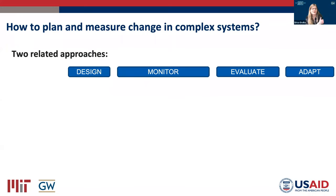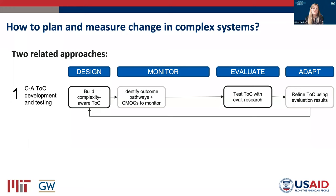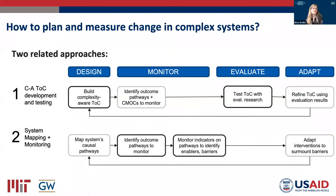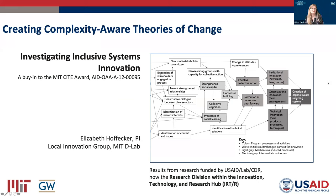This talk is really two talks about how to plan and measure change in complex systems. They span the cycle from designing interventions to monitoring their progress, evaluating their impact, and then adapting them as the system changes. The first project is about complexity-aware theories of change — Elizabeth will talk about how to build them and then how to test those theories with evaluation research. The second project is about system mapping and monitoring — how we map the system to identify what outcome pathways to monitor, and then monitor indicators on those pathways to identify enablers and barriers in the system.